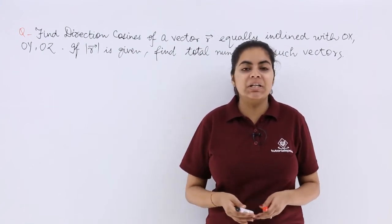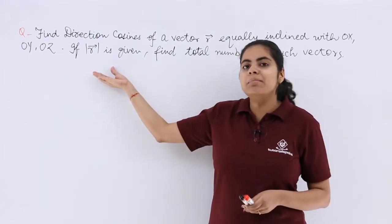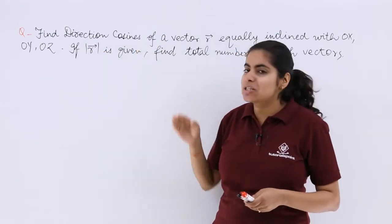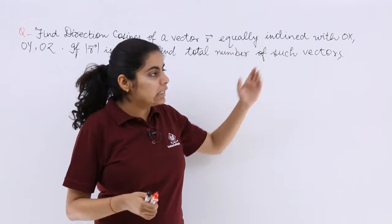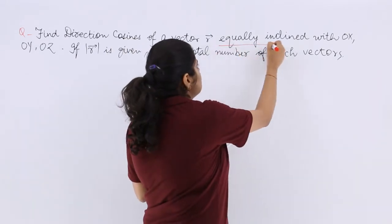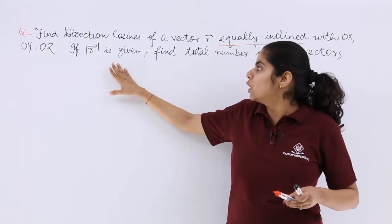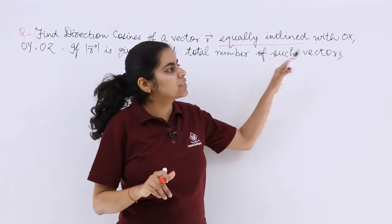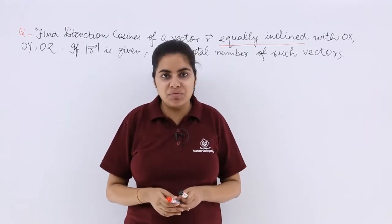Now after having a brief understanding of direction ratios and direction cosines, it is the time to solve a problem. Find direction cosines of a vector that are equally inclined. This terminology is very important — it says equally inclined with OX, OY, OZ. If the modulus is given, find the total number of such vectors.